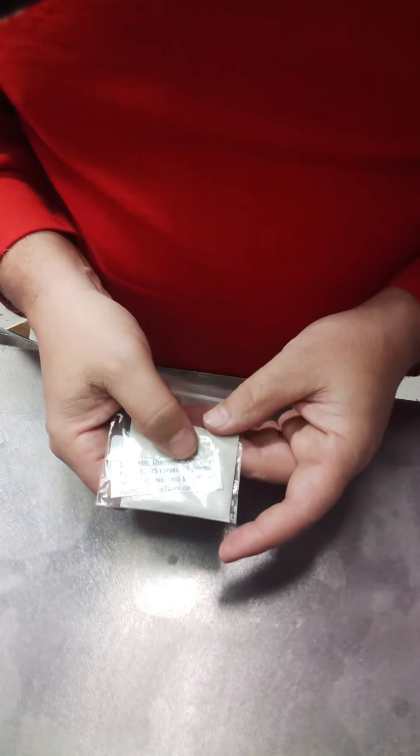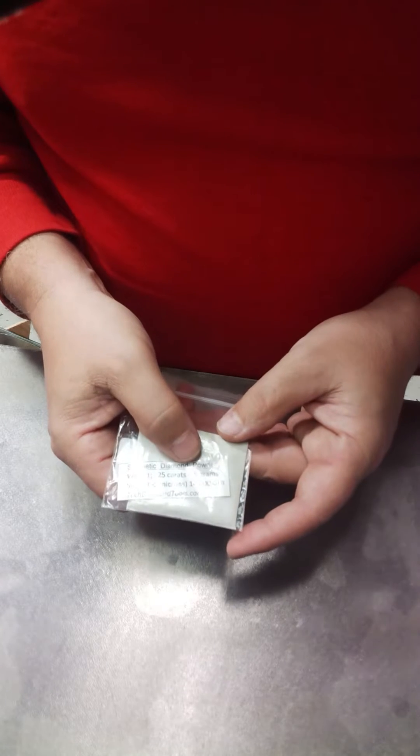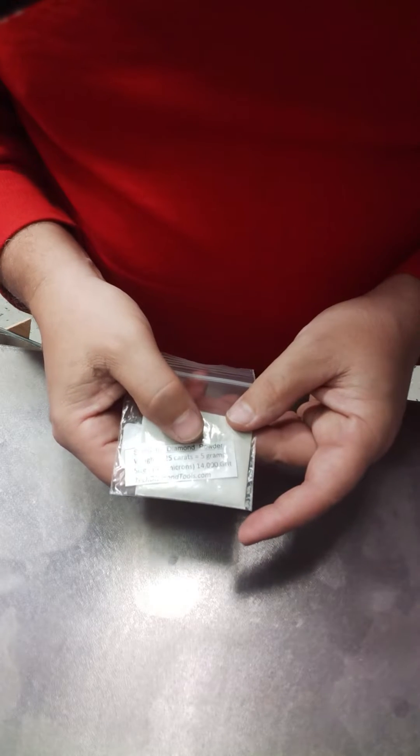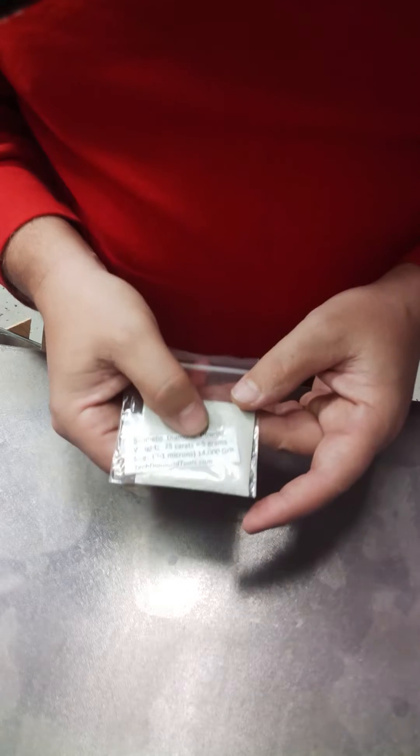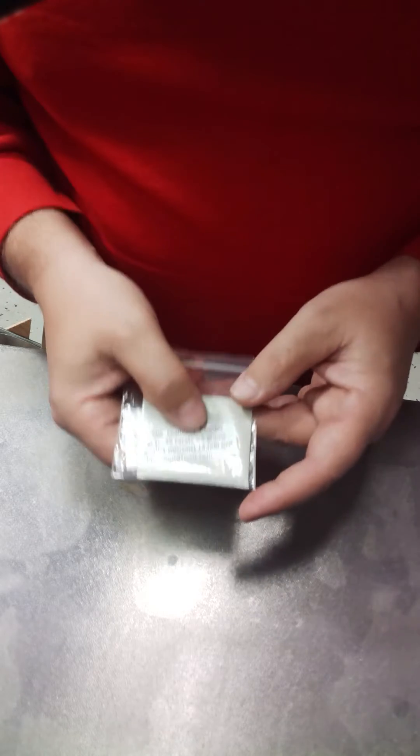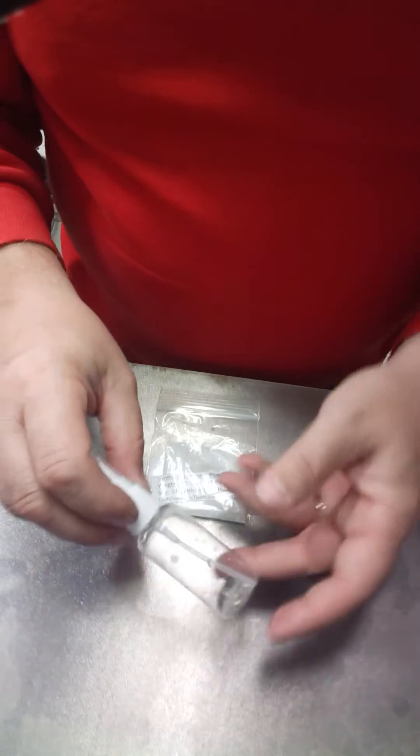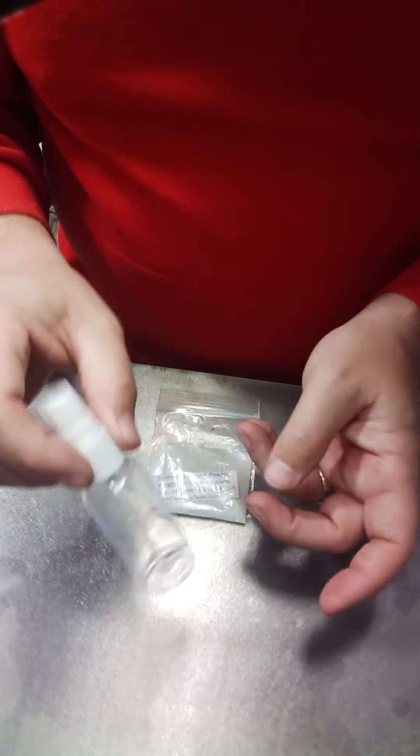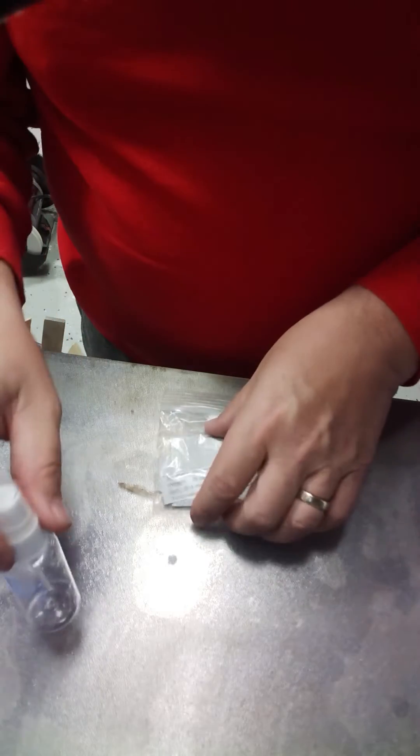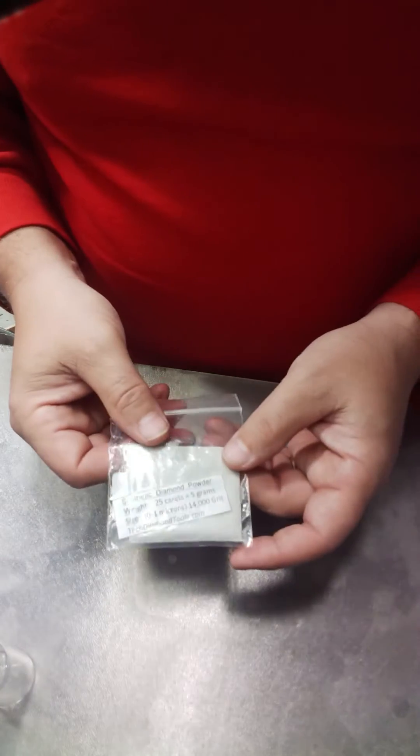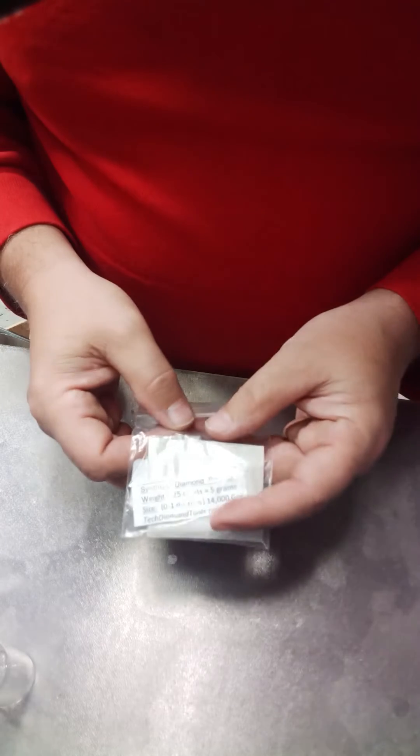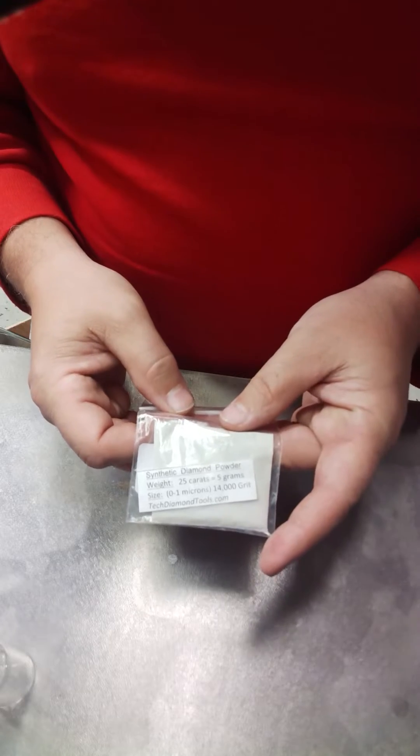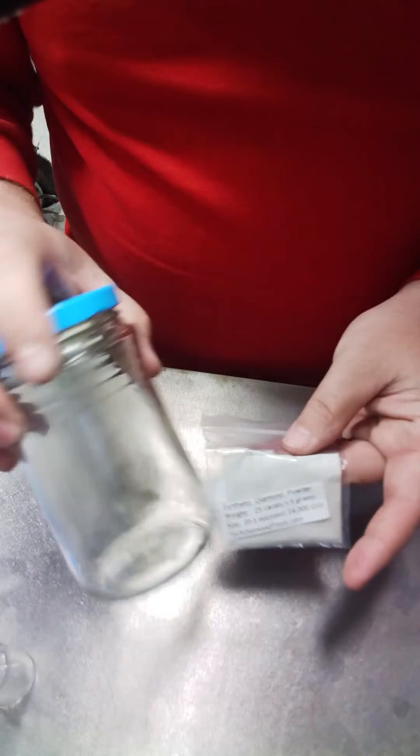What I want to do is make the recipe of one gram of powder to one ounce of water. So if I'm using a one ounce bottle, I'll have one ounce of solution in here, and in there will be one gram of diamond powder. These packets come in 25 carats, which is five grams of powder, so I need to get a jar and get five ounces of water solution.